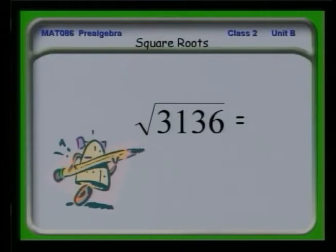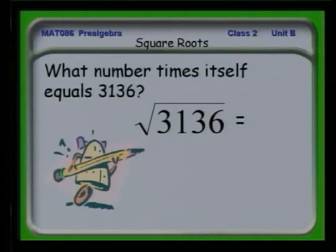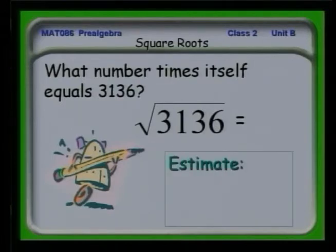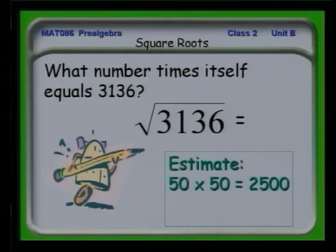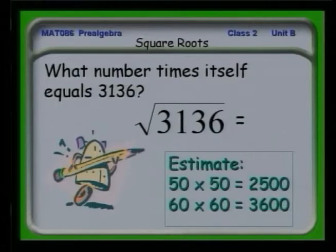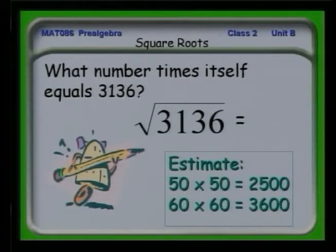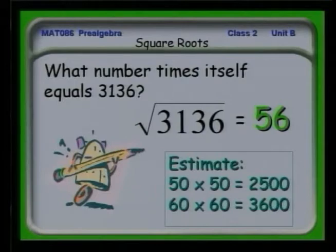Since 121 is closer to 100 than 400, let me guess 12. But 12 times 12 is 144, so let me guess 11. Sure enough, the square root of 121 is 11. Here's one that's harder: what number times itself equals 3,136? Let me estimate. 50 times 50 is 2,500 — too little. 60 times 60 is 3,600 — too much. So the number is closer to 60 than to 50. Let me try 56. Sure enough, 56 times 56 gives me 3,136.